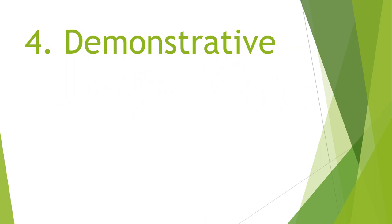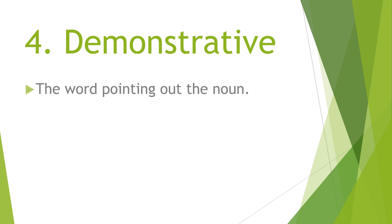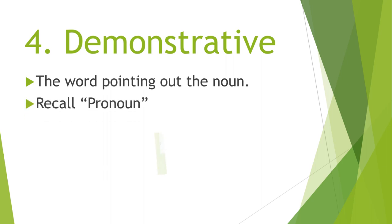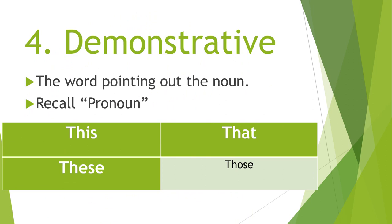The next kind is Demonstrative, which we have also dealt with in the kinds of pronoun. It is almost similar, but the use depends upon the circumstances and the context. Here, the word is pointing out and describing the noun — recall pronoun. The same four words: this, that, these, those. This — near to the speaker; that — away from the speaker; singular vs. plural applies similarly.